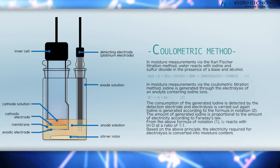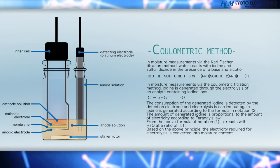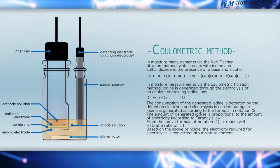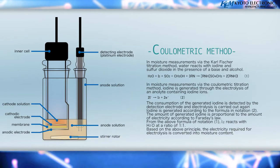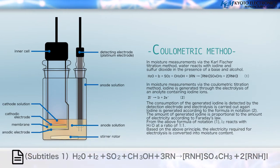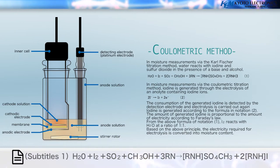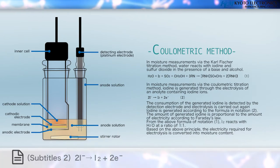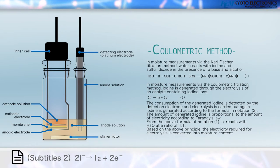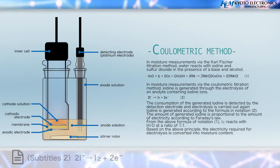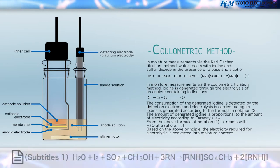In moisture measurements via the Coulometric Titration Method, iodine is generated through the electrolysis of an analyte containing iodine ions. The consumption of the generated iodine is detected by the detection electrode, and electrolysis is carried out again. Iodine is generated according to the formula in Notation 2, and the amount of generated iodine is proportional to the amount of electricity according to Faraday's Law.